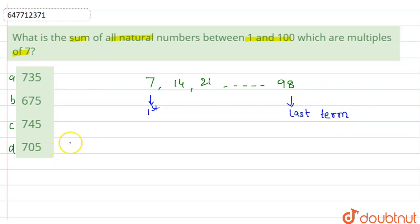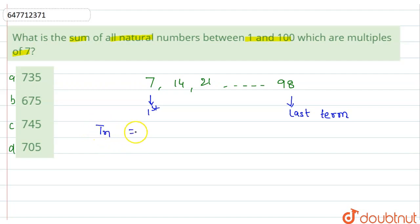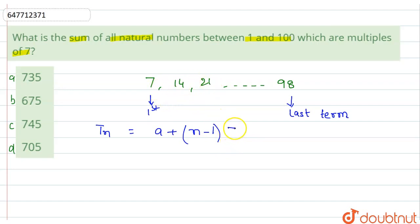अब हम इसे आगे चलके solve करते हैं. Progression में कितने numbers होंगे, कितने terms होंगे, उसका formula क्या होता है? Last term का formula होता है जिससे हम number of terms भी निकाल लेते हैं. Last term, जिसे t_n से denote करते हैं, उसका formula होता है: a plus (n-1) multiplied by d. यहाँ d यानिकी difference — 7, 14, 21 — तो difference क्या है? 7.